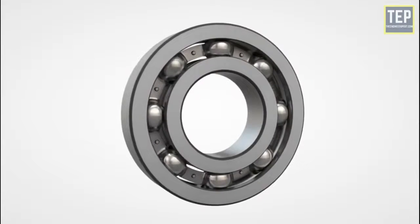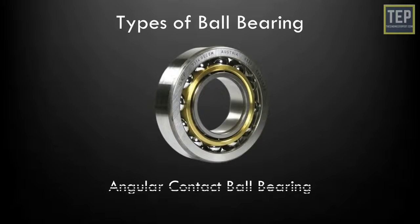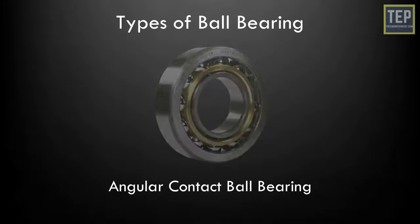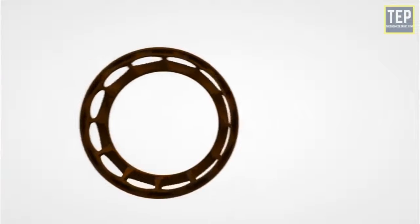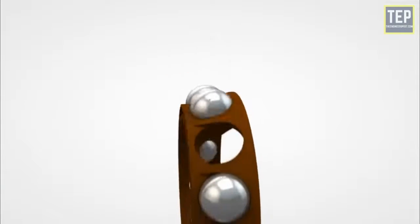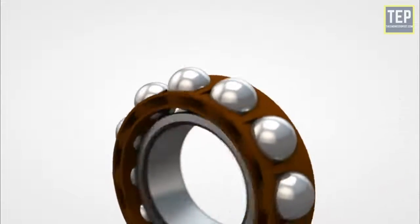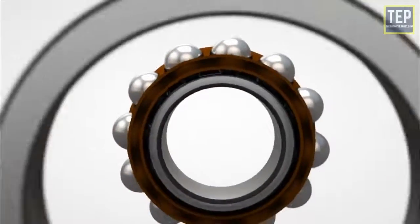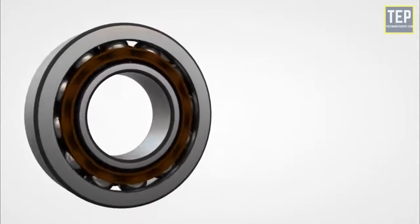Angular contact ball bearings. In this ball bearing, the inner and outer races are displaced with respect to each other along the bearing axis. This type is designed to handle greater amounts of axial loads in both directions in addition to radial loads.